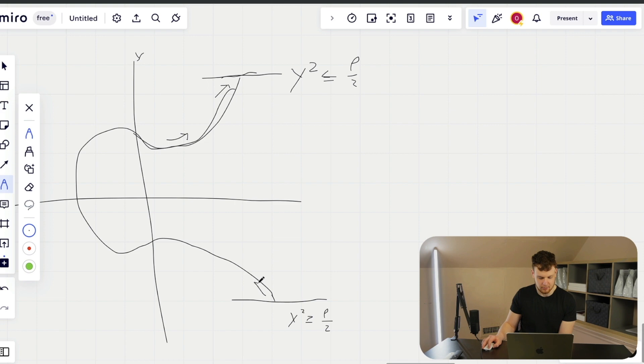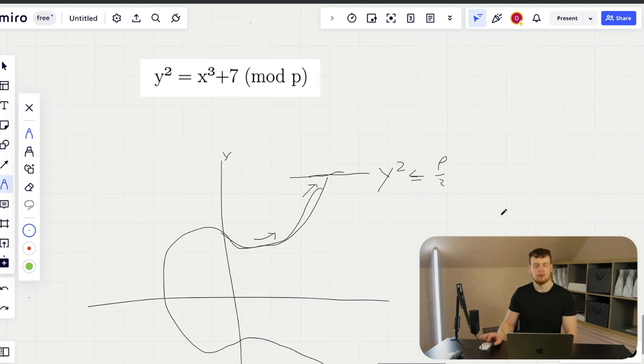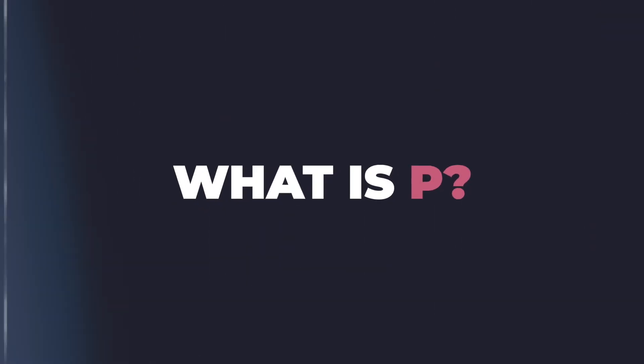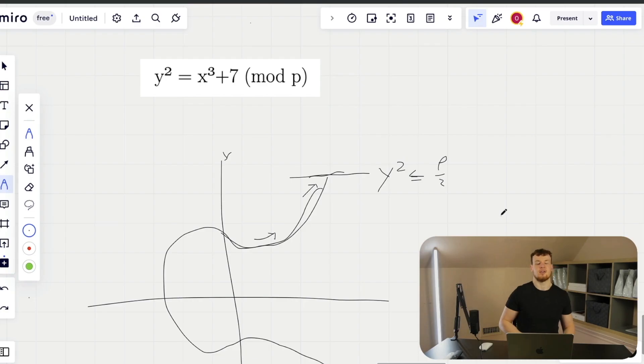But we're not going to get too in the weeds here. Basically, the interesting thing about that is just that the numbers will continue, they'll go this way, this way, and then all of a sudden they'll just wrap back around and go like this. Okay, great. So what even is p? P is a prime number that is actually characteristic to secp256k1, and it is a very large prime number.